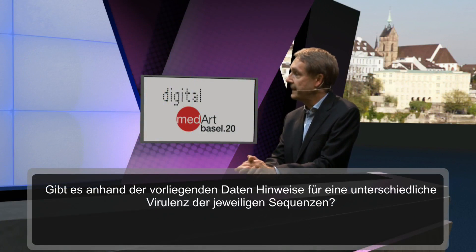Regarding whether there is evidence from the sequencing data for different virulence of sequences: from genomic data itself, there is not. We assume that the prevalence of certain variants in certain places is explained primarily by chance and founder effects — that is, by the first virus introduced having more influence than by systematic differences between virus variants in terms of virulence.